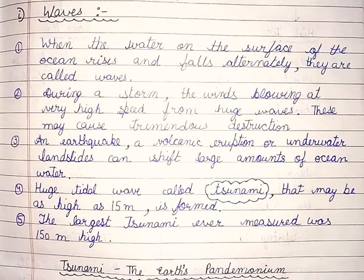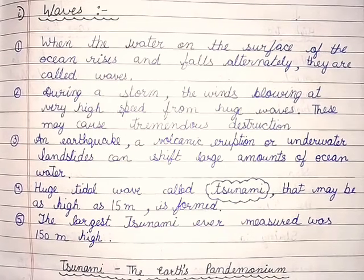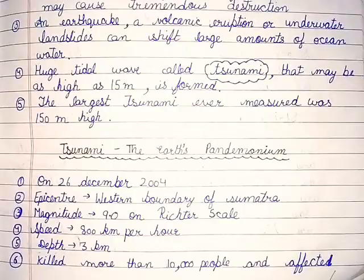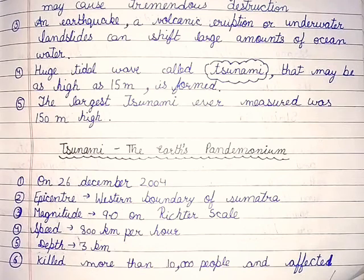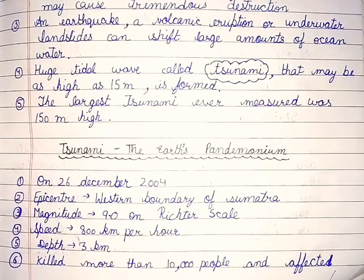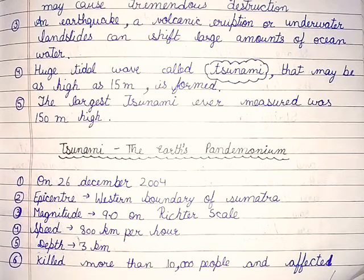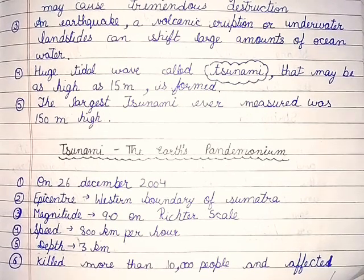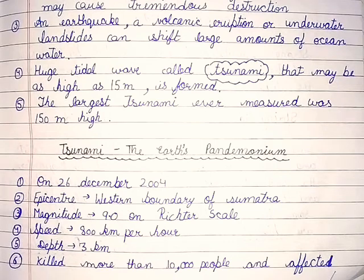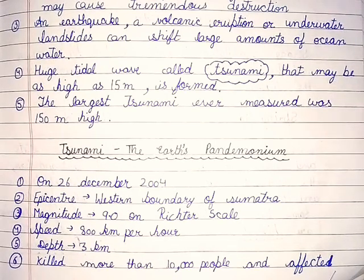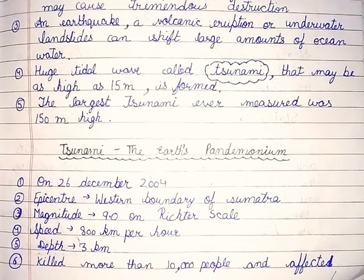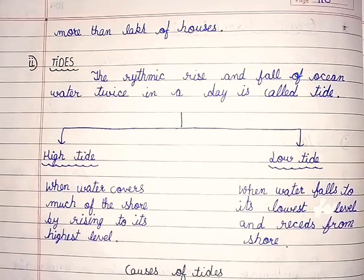Huge tidal waves called tsunamis that may be as high as 15 meters are formed. The largest tsunami ever measured was 150 meters high. Tsunami — the earth's pandemonium on 26th December 2004: epicenter at the western boundary of Sumatra, magnitude 9.0 on the Richter scale, speed 800 km per hour, depth 3 km. It killed more than 10,000 people and affected more than lakhs of lives.